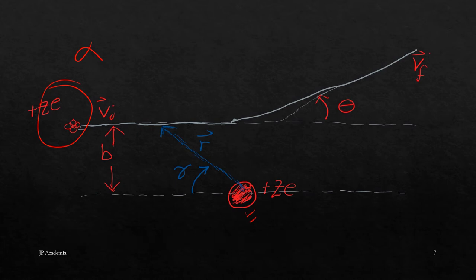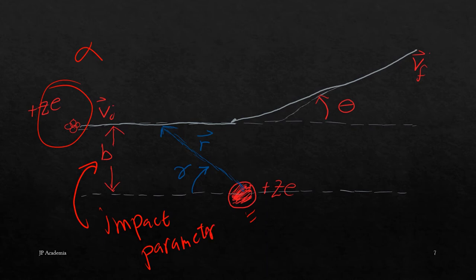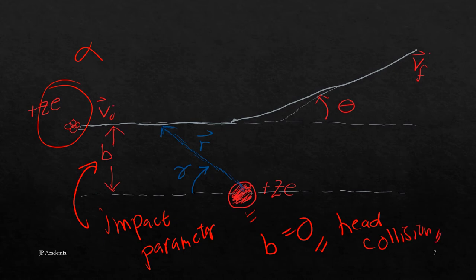Assuming the alpha particle and the nucleus are point charges, we can define the following parameters. First, we have B, the impact parameter. This is the minimum distance to which the alpha particle would approach the nucleus if there were no force between them. If your impact parameter B is equal to zero, it means a head-on collision. The next parameter is your scattering angle theta, which is the angle between the asymptotic direction of approach of the alpha particle. The trajectories for this case are hyperbolic.